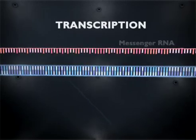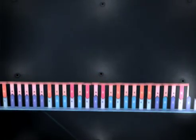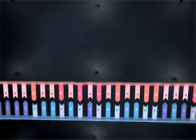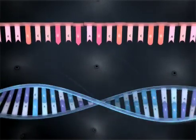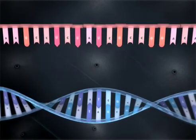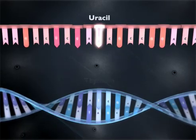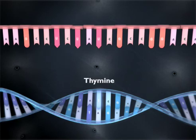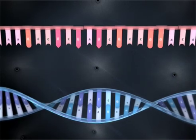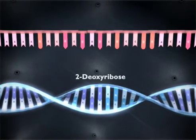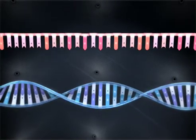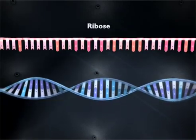Transcription is the process by which RNA is created from a DNA template. RNA is a chemical similar to DNA, but it differs in two ways. One is that it contains the nucleotide uracil instead of thymine. The other difference is that DNA has a backbone of 2-deoxyribose, while RNA has a backbone of ribose.